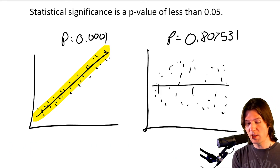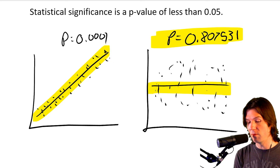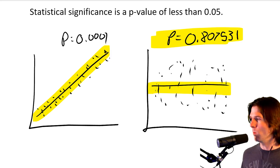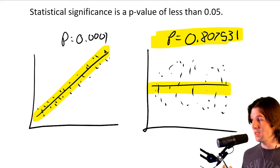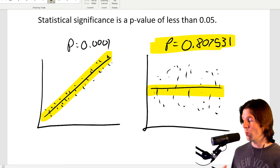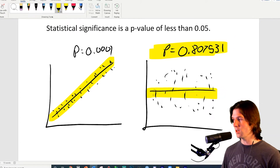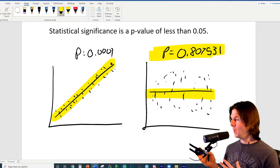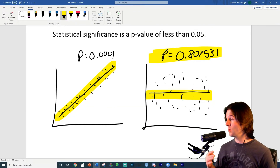You'll notice the p-value for this horizontal line is 0.80753, which rounds to 1 — that is not statistically significant. We'd say there is an insignificant relationship here between X and Y; there's no linear relationship and we do not have evidence of a statistically significant relationship.